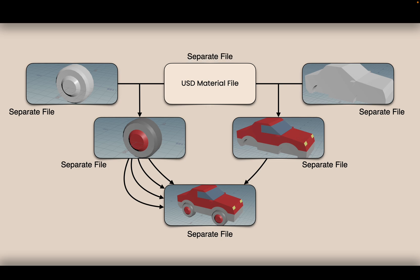Each of these separate files can be opened and edited separately. Someone could be using that fully created car and placing it in a larger scene, while at the same time someone else could be opening up the car geometry and editing it in 3ds Max, Maya, or Houdini. When they all save their files, it's all automatically reflected to each other. That's really powerful with USD.